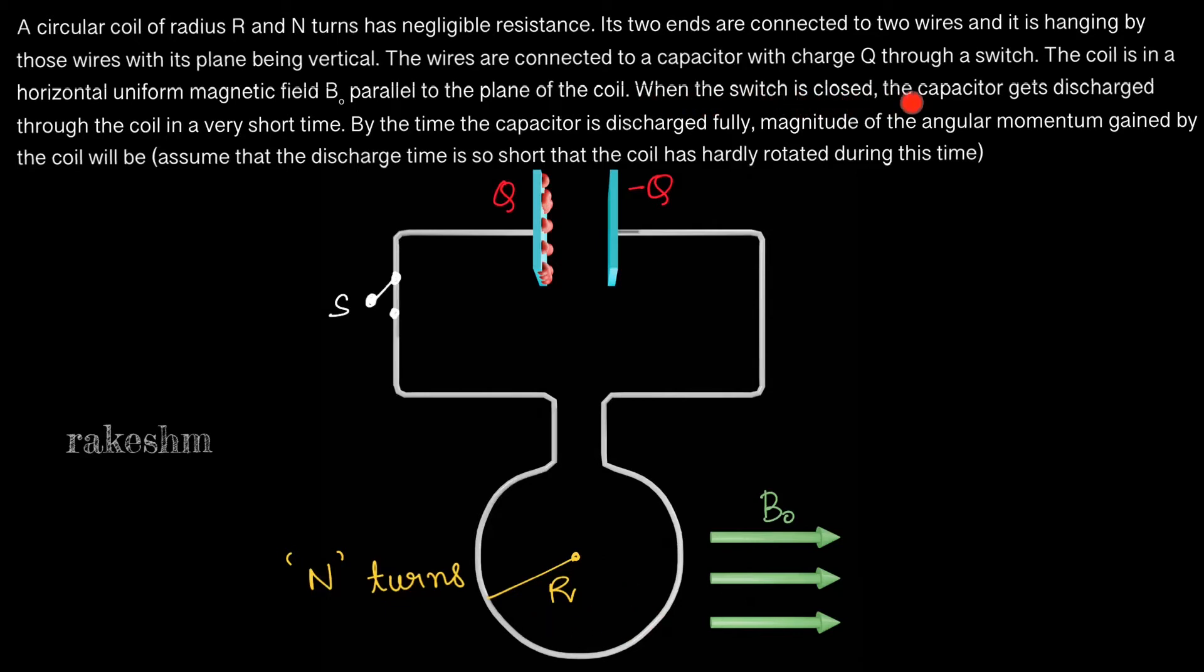When the switch is closed, the capacitor gets discharged through the coil in a very short time. The red spheres you see here are charged carriers and their motion indicates the direction of current in the circuit. By the time the capacitor is discharged fully, what is the magnitude of the angular momentum gained by the coil? Assume that the discharge time is so short that the coil has hardly rotated during this time.